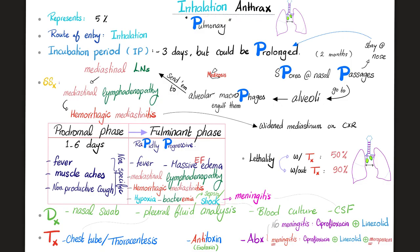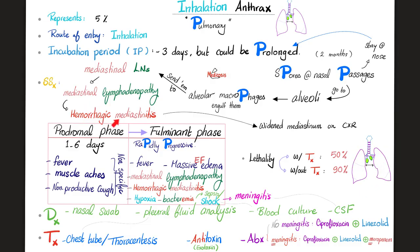Number two: inhalation anthrax — 5% of cases. Route of entry: inhalation. Incubation period about three days, but this pulmonary anthrax could be very prolonged — it could take two months. Why? Because the spores are hiding in your nose and can remain as a spore, prolonging the incubation period. Or they can go to the alveoli, be engulfed by your alveolar macrophages, and sent to the mediastinal lymph nodes — resulting in mediastinal lymphadenopathy, which will widen the mediastinum on chest X-ray, and can also lead to hemorrhagic mediastinitis.